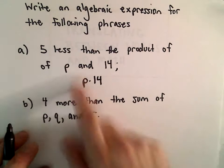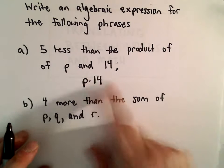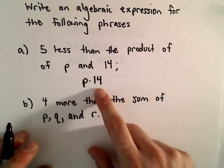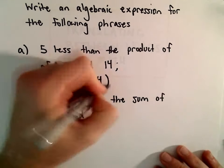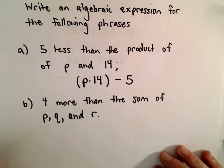But we need it to be 5 less than this. So if we have P times 14, if we want to get something 5 less than that, we can just subtract 5.